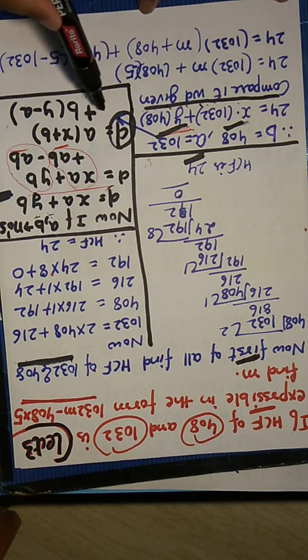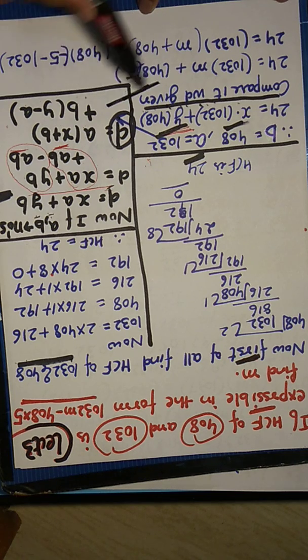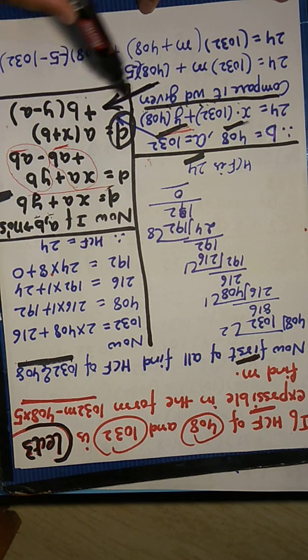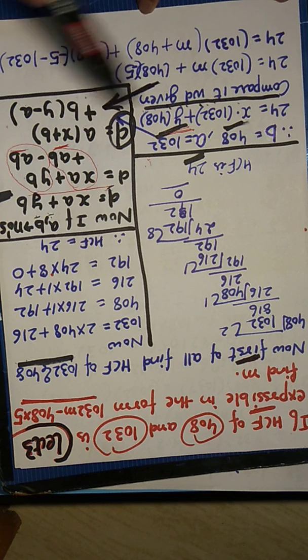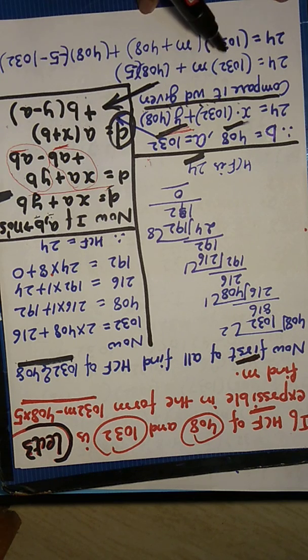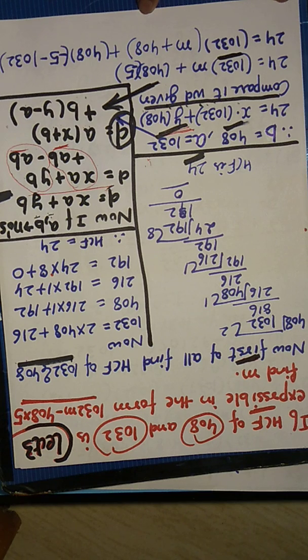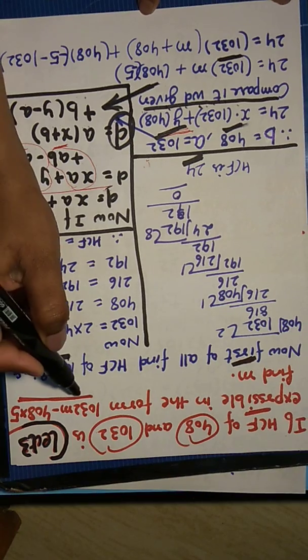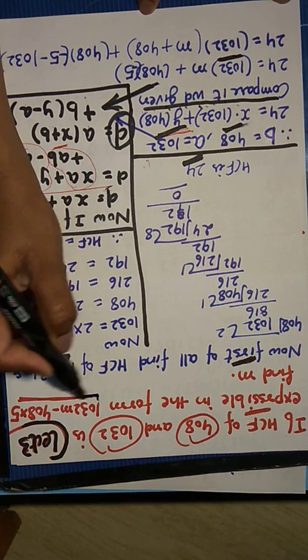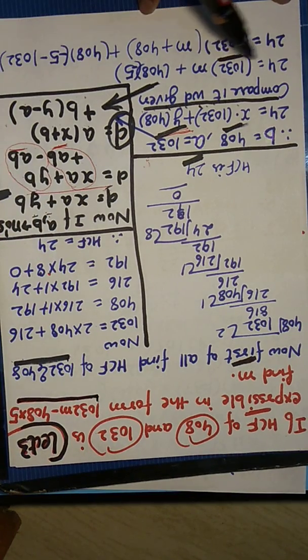Now see, when you have to write D, how much is D? What is D? D is the HCF. D equals to means 24 equals to X into 1032 plus Y into 408. D equals to, in this case according to D equals to XA plus YB, this statement I have to write this again.